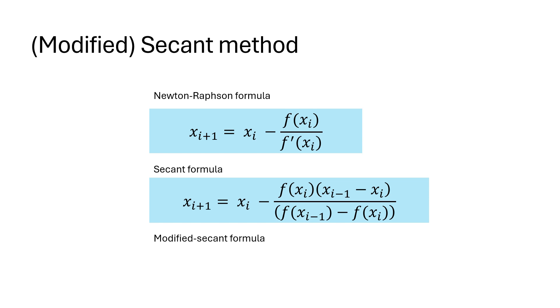We can further modify this to use an initial guess and a perturbation parameter. This leads to the modified secant formula.